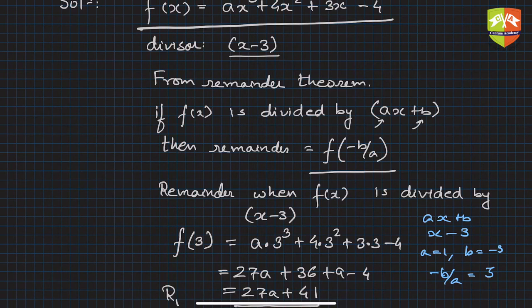What is the value of b and a in terms of the divisor? The general form is ax + b, and I'm comparing this with (x - 3). So clearly a is 1 and b is -3.